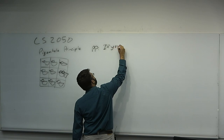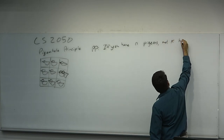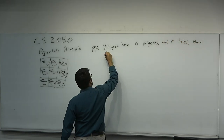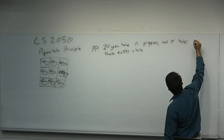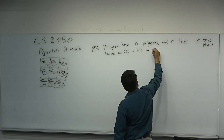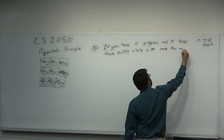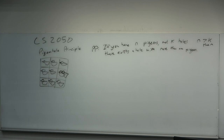Formally: if you have N pigeons and K holes, with N greater than or equal to K, then there exists a hole with more than one pigeon. Pretty simple statement — you have more pigeons than holes, and every pigeon must be assigned into a hole, so certainly there exists a hole with more than one pigeon. That's almost obvious. We won't prove the Pigeonhole Principle itself; we'll generalize it and prove the generalization, and then it will follow easily.